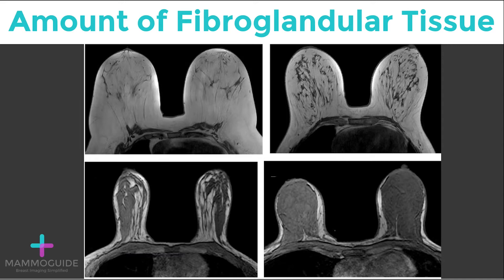Evaluating for the amount of fibroglandular tissue, you can see the first image in the upper left has almost entirely fat. The next image shows scattered fibroglandular elements. The bottom left is heterogeneously dense. And the bottom right is extremely dense fibroglandular tissue.